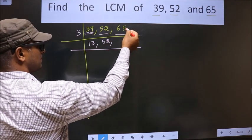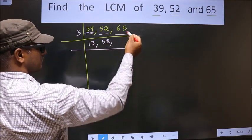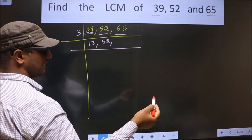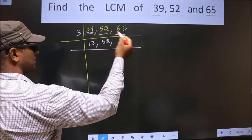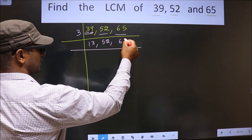Now the other number is 65. 6 plus 5 is 11. 11 is not divisible by 3, so this number is also not divisible by 3. So you write it down as it is.